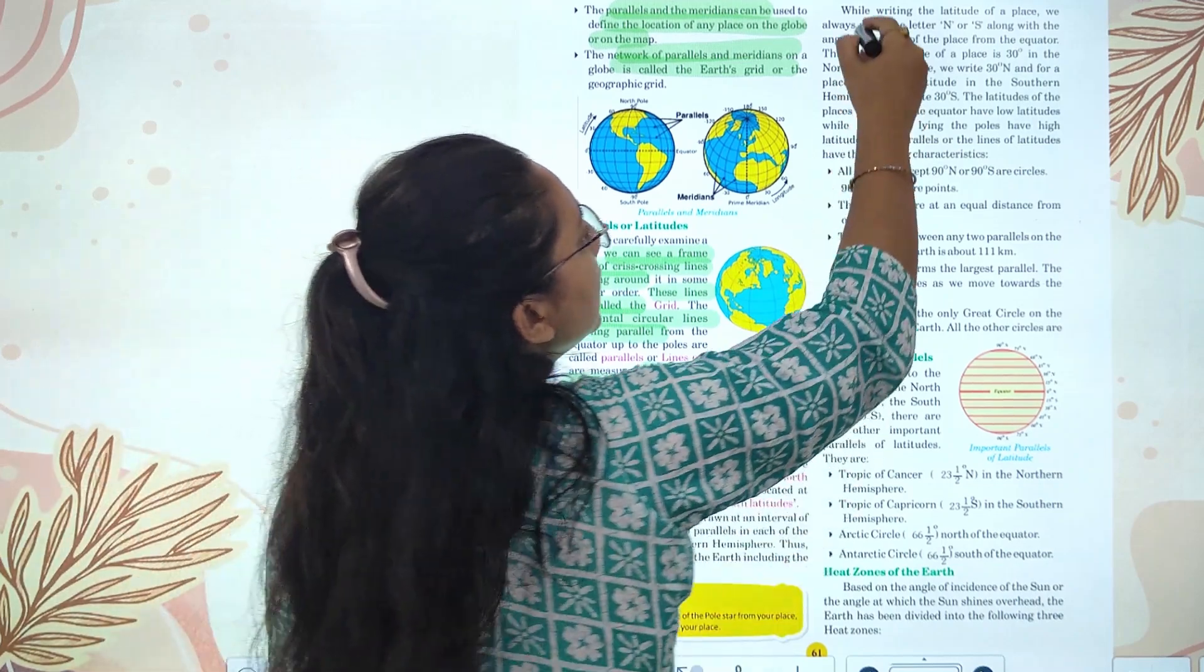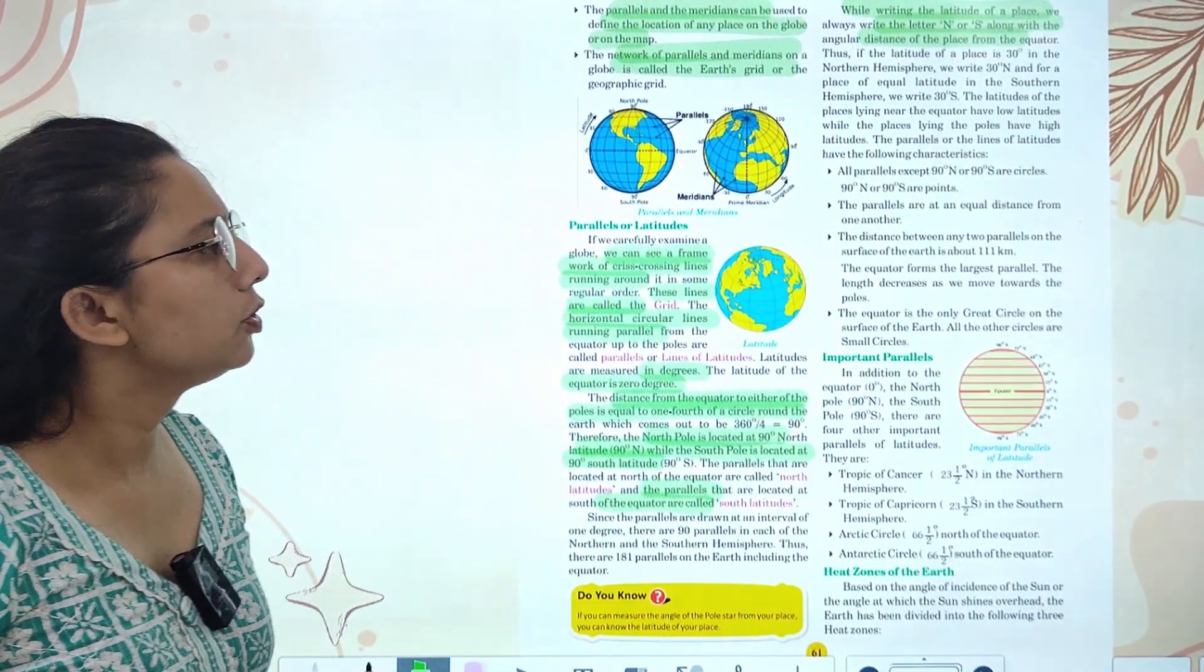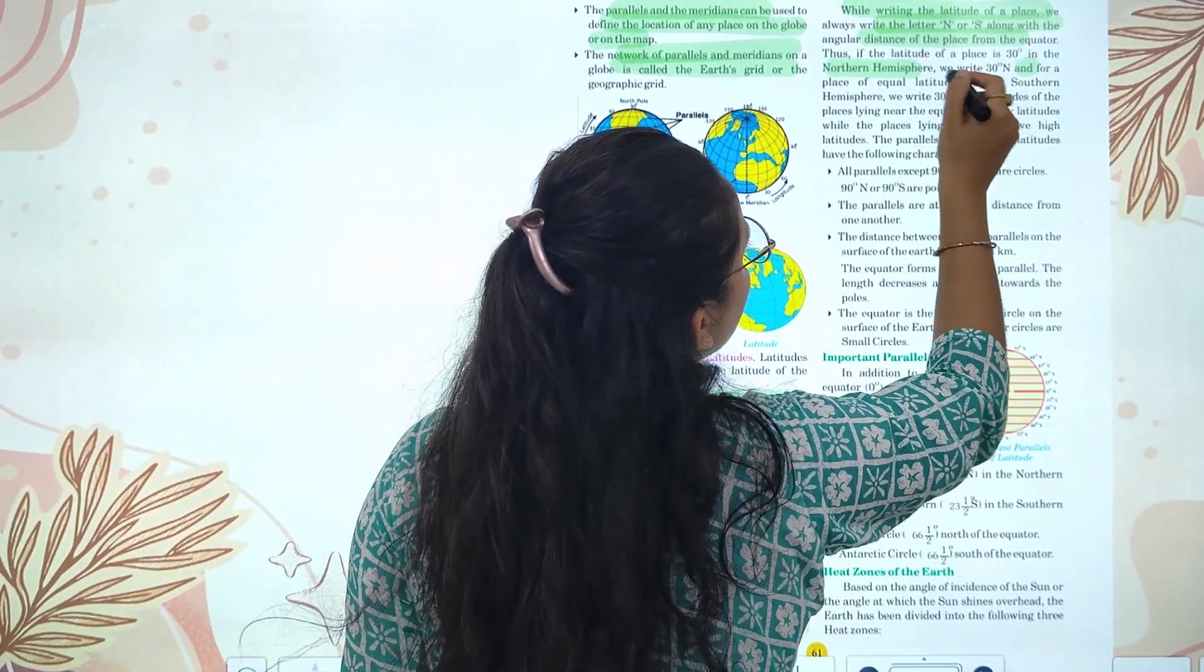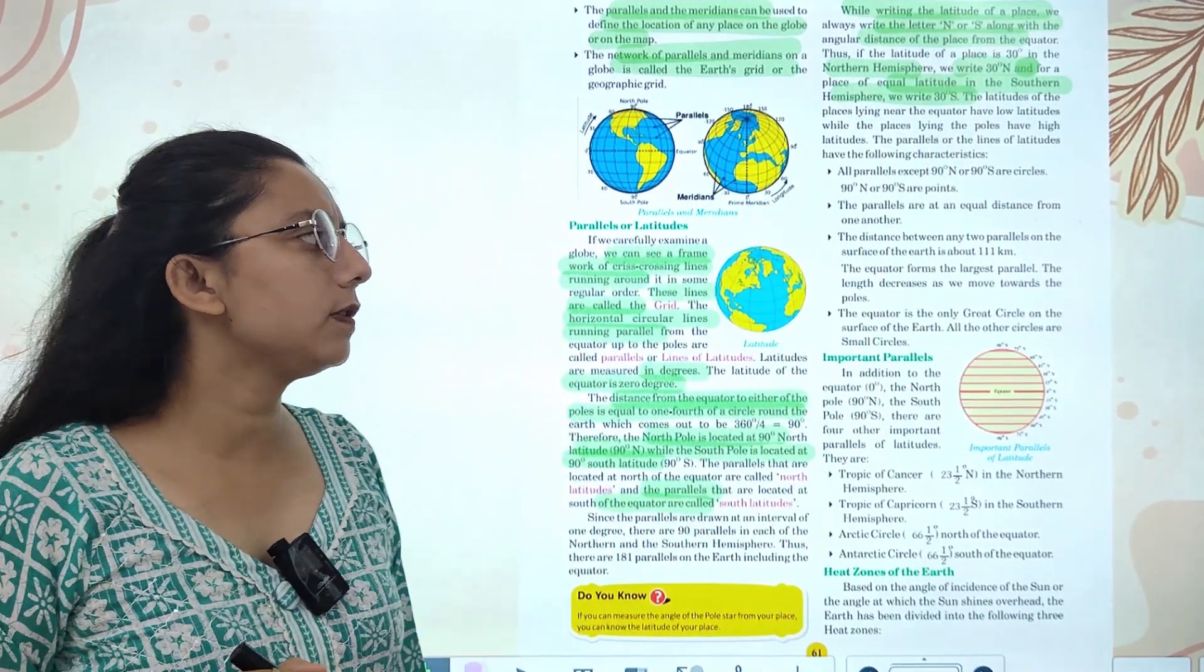While writing the latitudes, we always write N or S along with the distance of the place from the equator. For example, the latitude of 30 degrees in northern hemisphere would be 30 degrees north, and in southern hemisphere it would be 30 degrees south.